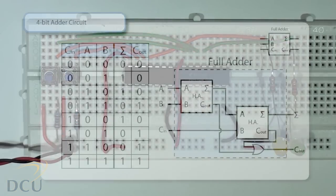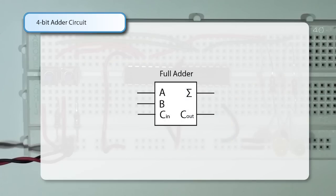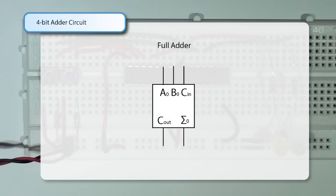So if we take a full adder as a block, it has its inputs A, B, and carry in, and it has its outputs carry out and sum. If we just rotate it on to its side so that we can cascade them side by side, we place four of these in a row.